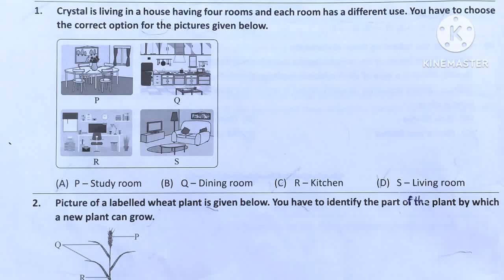Option A: P is study room — but P room is not a study room, it is a dining room. Option B: Q is dining room — but Q is not a dining room, it is a kitchen.